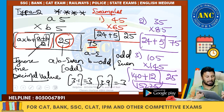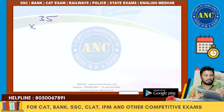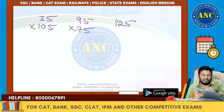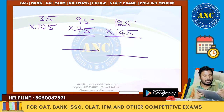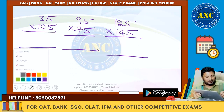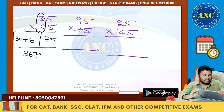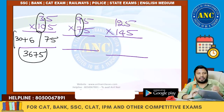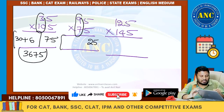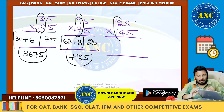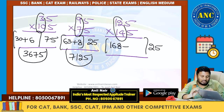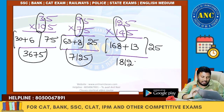Three more examples: 35 × 105: 3 is odd, 10 is even – odd 5 into even 5 – 75. 10 × 3 = 30, plus 13/2 = 6.5 → take 6. Answer is 3675. 95 × 75: odd 5 into odd 5 – 25. 7 × 9 = 63, plus 16/2 = 8. Answer is 7125. 125 × 145: even and even – 25. 12 × 14 = 168, plus 26/2 = 13. Answer is 18125. I hope the idea is clear for all these examples.